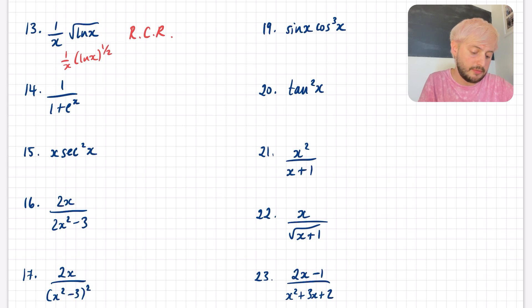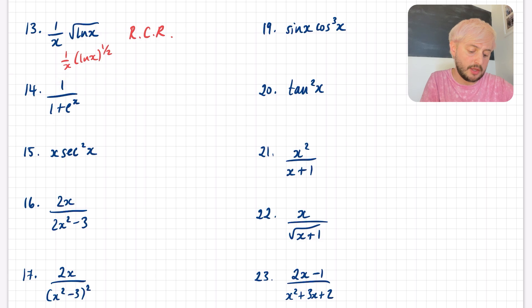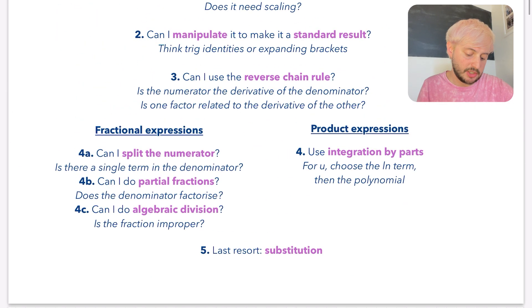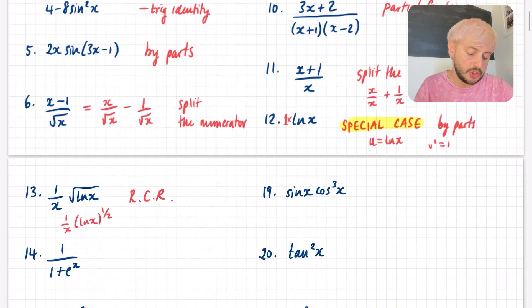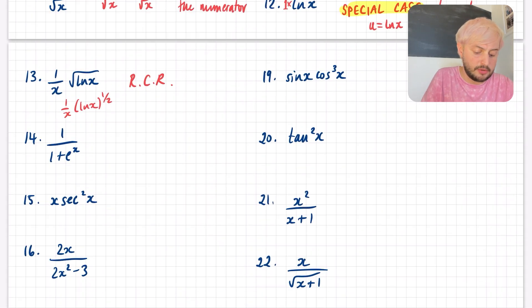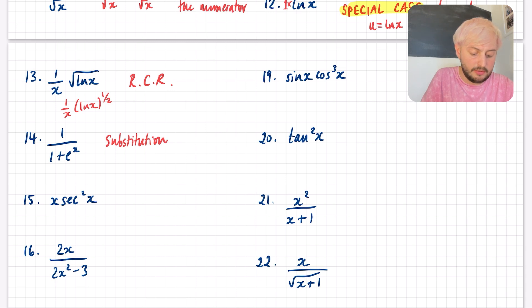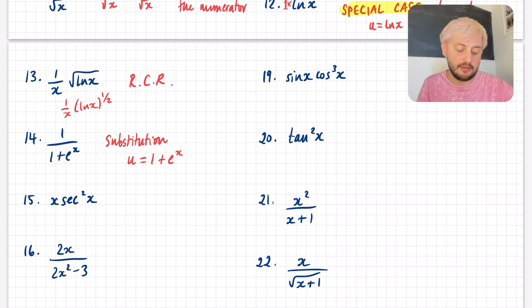Question 14: it doesn't look like a standard result, and I can't do the reverse chain rule because the numerator is not the derivative of the denominator. I can't split the numerator, can't do partial fractions, and can't do algebraic division because it's not even a polynomial. So for this one, we're at our last resort — substitution. I would try U = 1 + eˣ as the substitution.